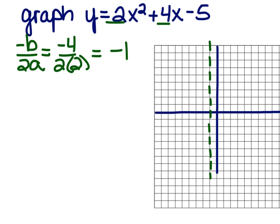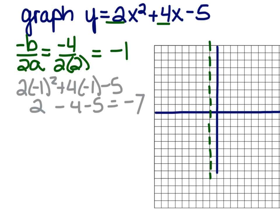So now I'm going to plug in a negative 1. I've got 2 times negative 1 squared plus 4 times negative 1 minus 5. It gives me 2 minus 4 minus 5, which is negative 7. So now I know my vertex is at negative 1, negative 7, and I'm going to plot that point.